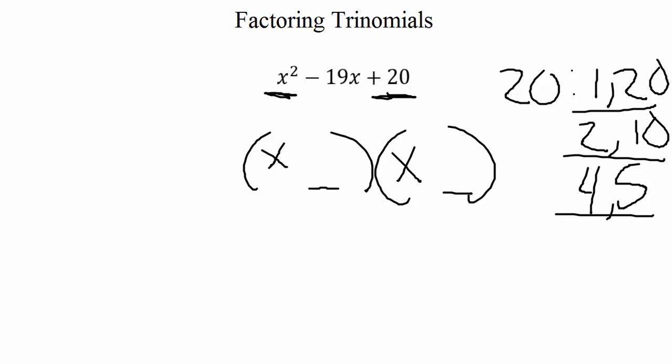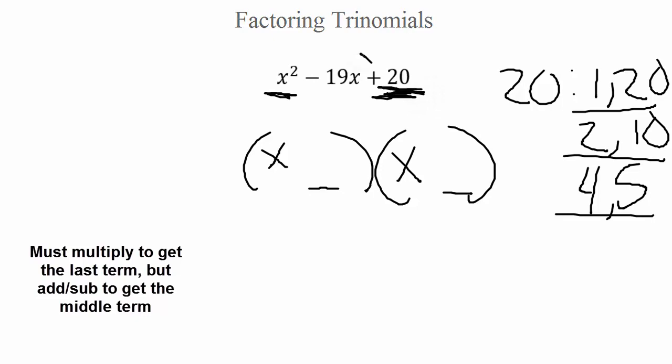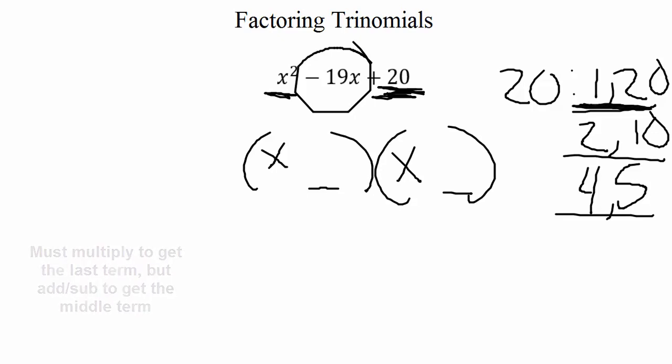Now, what we need, how we figure out which one of these 3 combinations that we're going to use is this. We want the combination of factors that will multiply to get our last term, but will add or subtract to get our middle term. So we need to think, will any of these add or subtract to get a 19? Well, 20 minus a 1 would give us 19. 10 minus a 2 wouldn't work. 10 plus a 2 wouldn't work. 4 plus 5 or 5 minus 4 would not work. So let's go with the 1 and the 20.